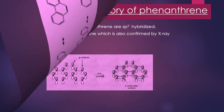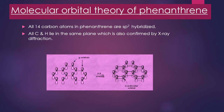Coming to the molecular orbital theory of phenanthrene. All 14 carbon atoms are sp2 hybridized, and all sp2 hybrid orbitals overlap with each other and with the s orbitals of the 10 hydrogens, forming carbon-carbon and carbon-hydrogen sigma bonds. Since all carbons are sp2 hybridized, all carbon and hydrogen atoms lie in the same plane, confirmed by X-ray diffraction studies. The sideways overlapping of unhybridized p orbitals produces a pi molecular orbital above and below the plane, containing 14 pi electrons.